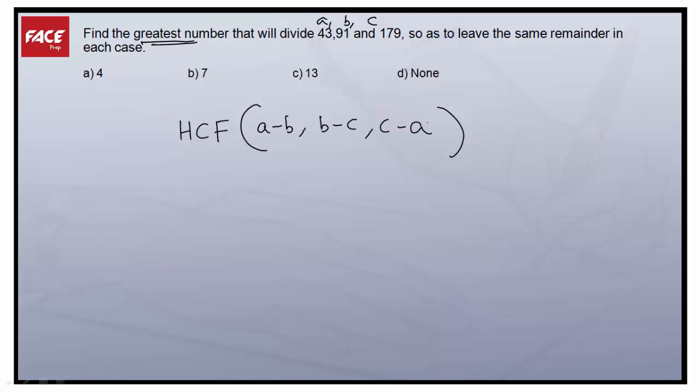So here in this case we have to find HCF of 91 minus 43, 179 minus 91, 179 minus 43. We have to find the HCF of this and get the answer for this question.